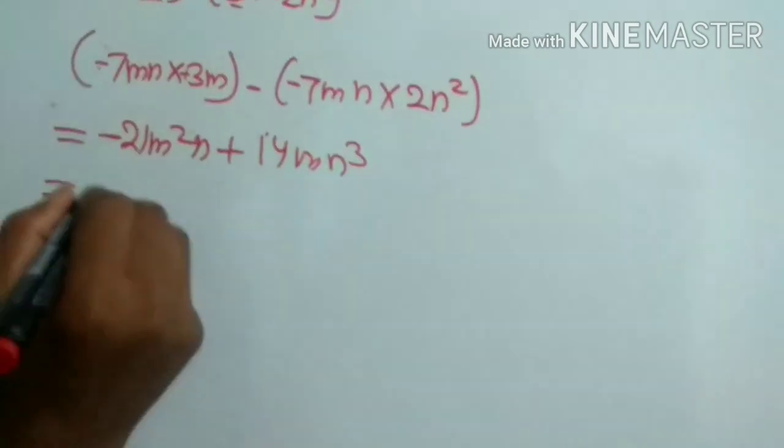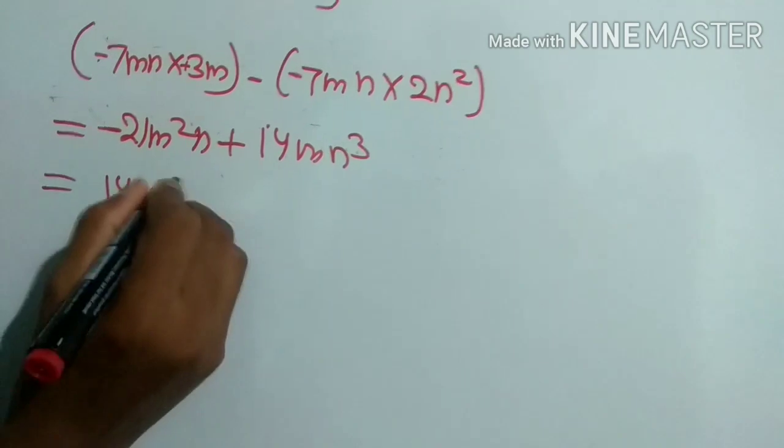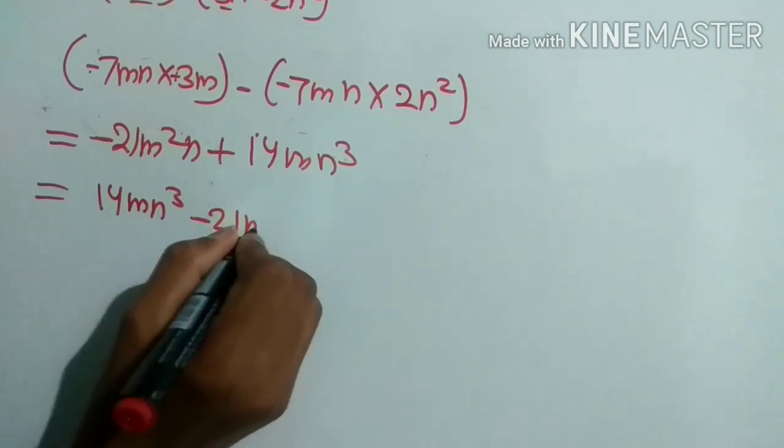First, plus value is 14mn cubed minus 21m squared n.